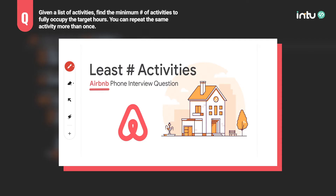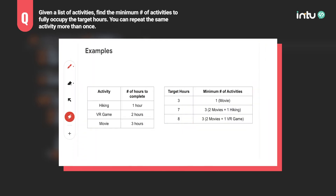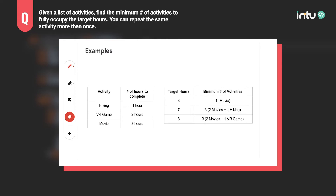Hey everyone, today we'll go over another Airbnb phone screen interview question. The question is: given a list of activities, find the minimum number of activities to fully occupy the target hours. You can repeat the same activity more than once. Let's get started. Let's say we have the following activities: hiking, VR game, and movie, and they take one hour, two hours, and three hours respectively.